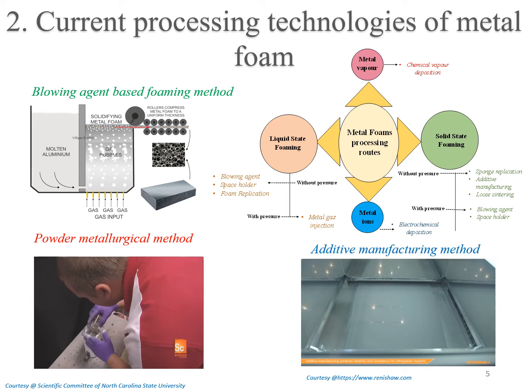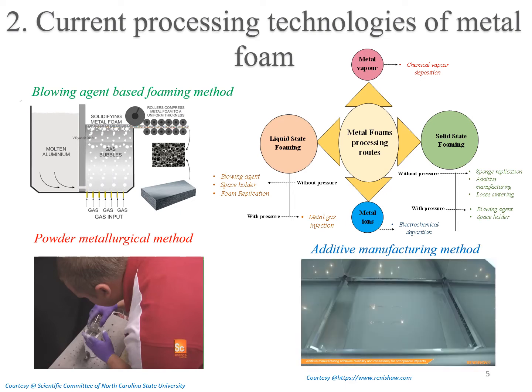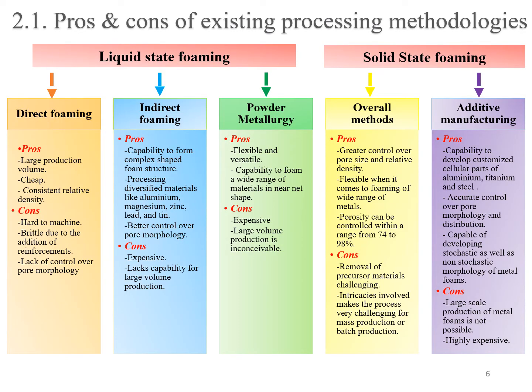The compact mix is then foamed by melting. Further, metal foam can also be processed using additive manufacturing methods with greater accuracy, pore morphology, and distribution. Prima facie, solid state foaming techniques might seem like more developed techniques with greater control over pore morphology and distribution; yet these processes lack the capability of generating metal foam in large volumes. On the contrary, liquid state foaming, though it does not provide such accuracy or control over pore morphology, is capable of producing metal foam at large volume with consistent relative density.